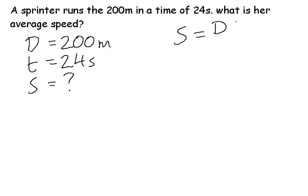So we work out speed equals distance divided by time. Sub in the values, speed equals 200 divided by 24.